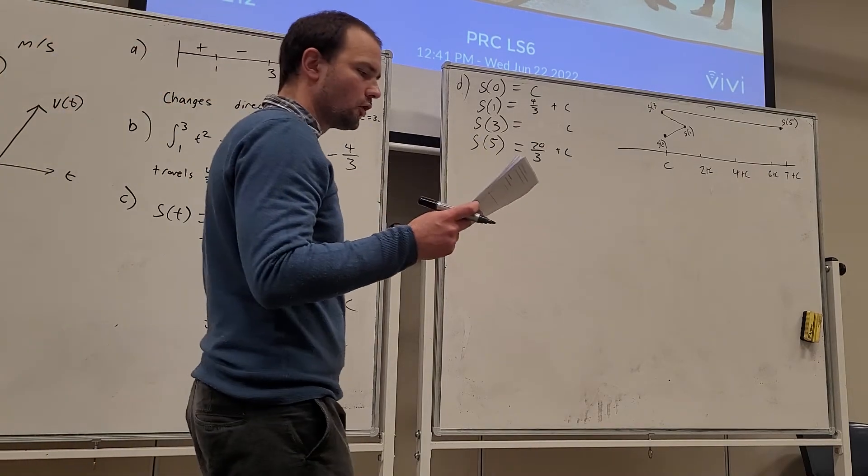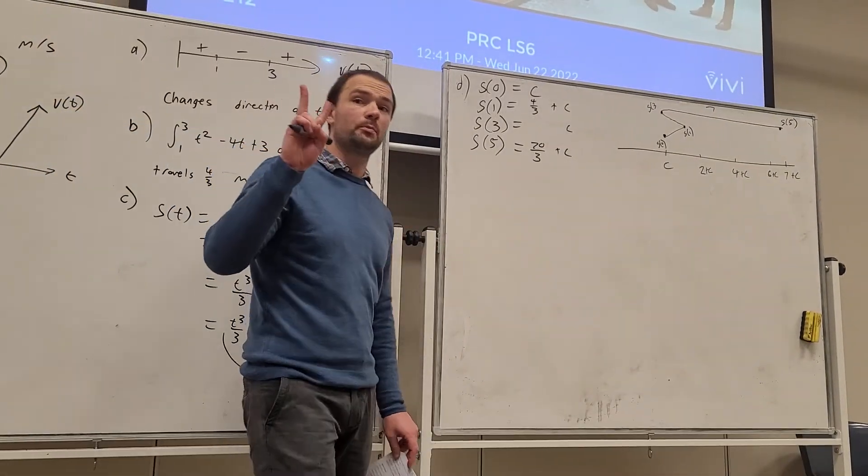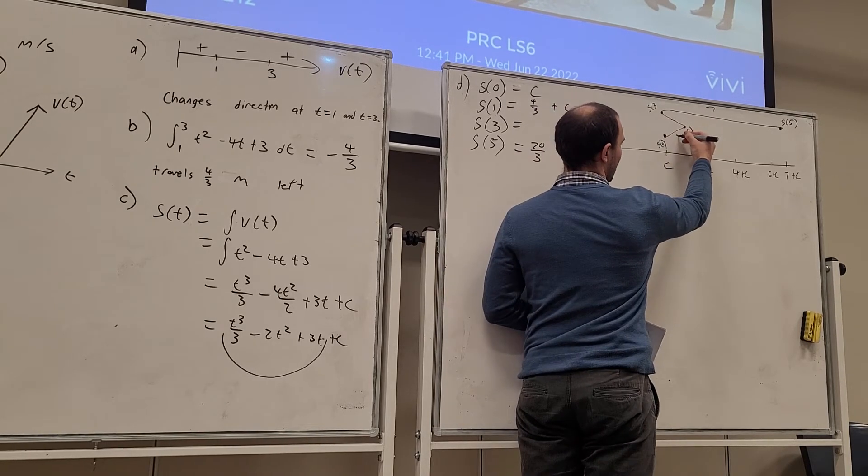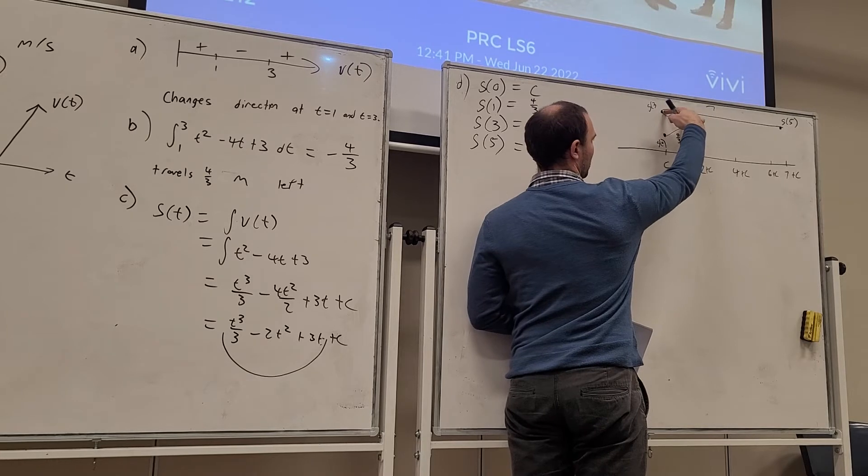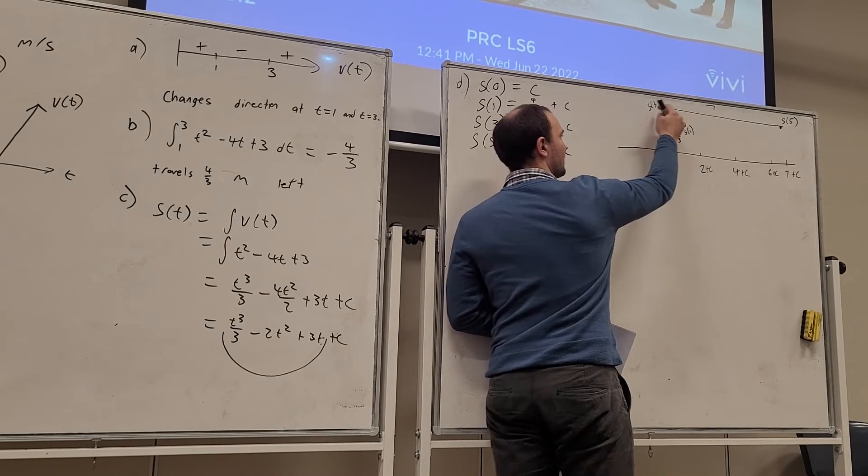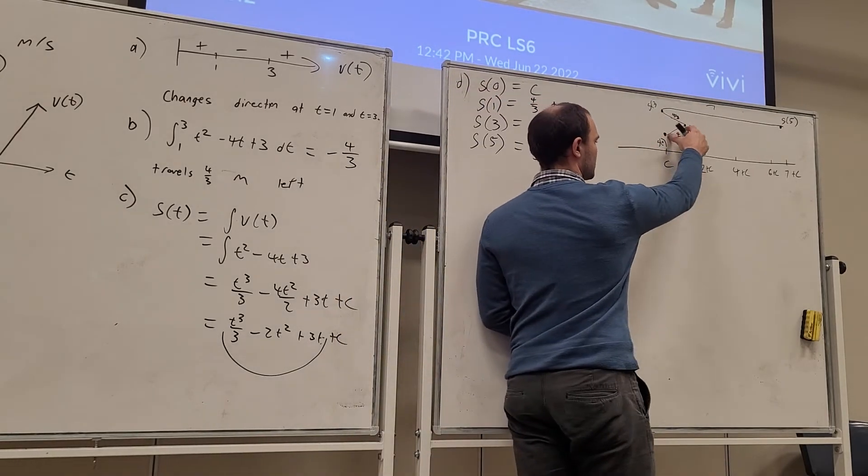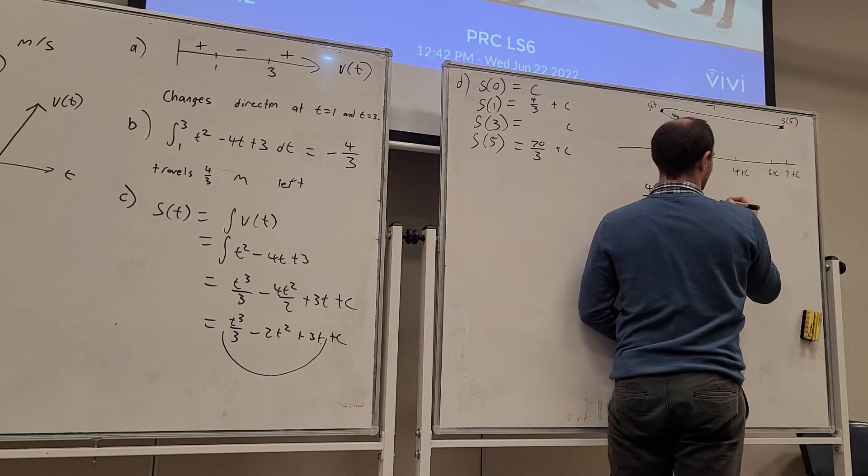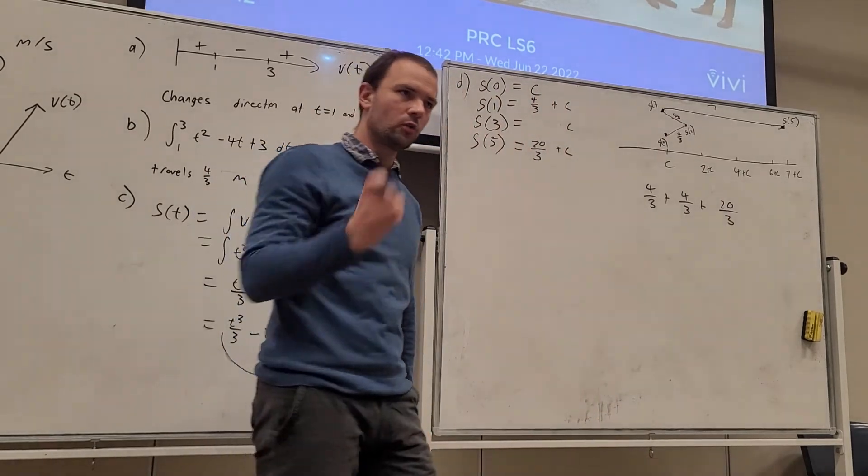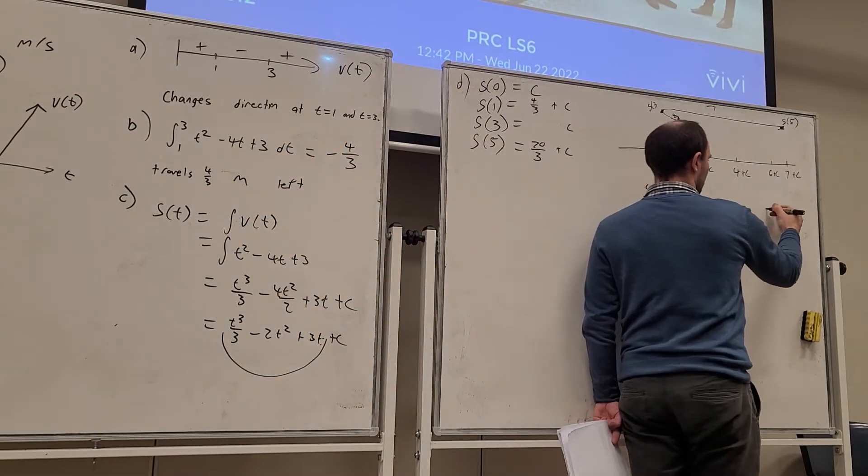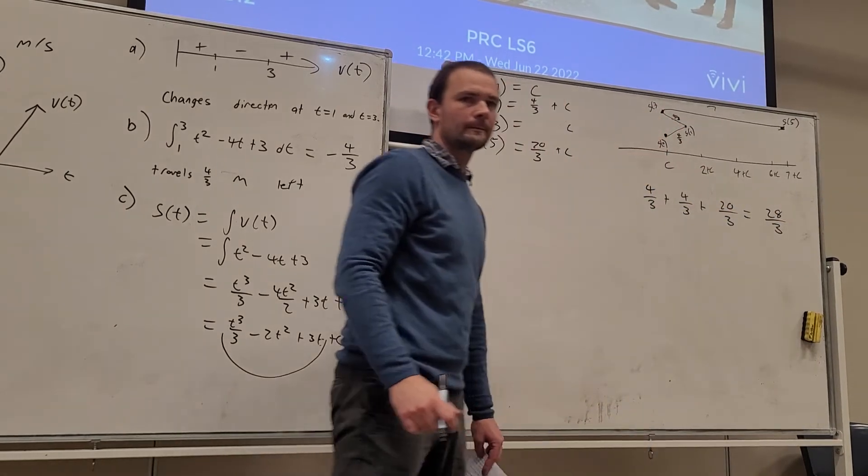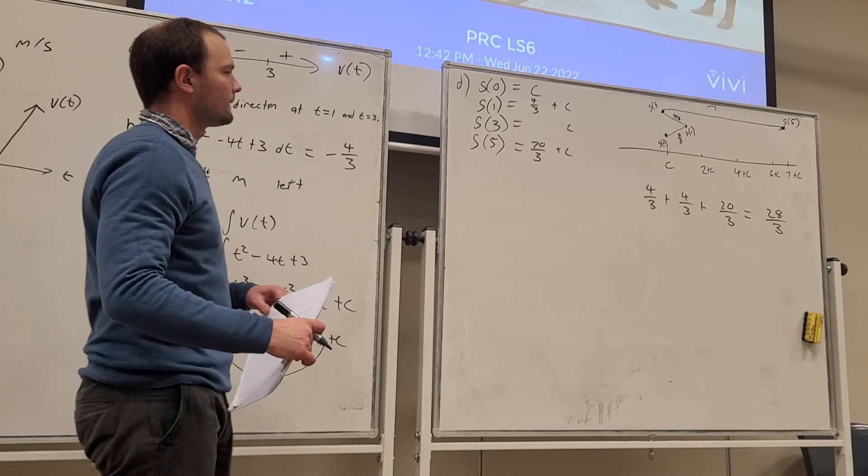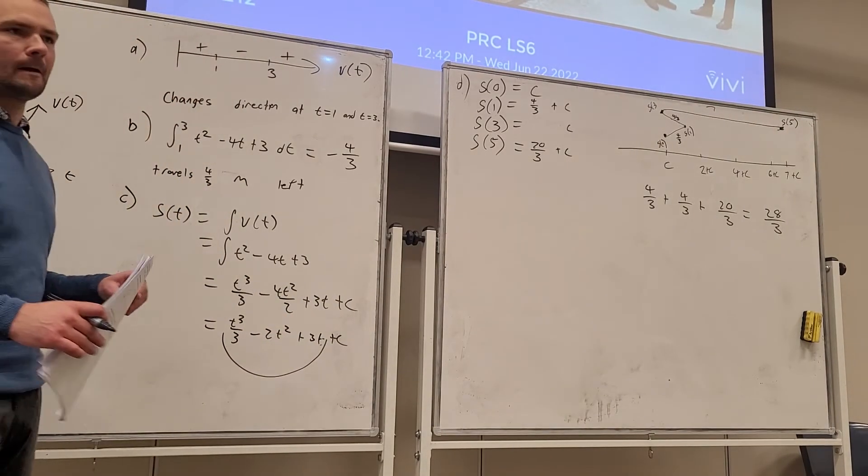Part E. Determine the total distance over the first 5 seconds. I'm going to show you two procedures here to determine the total distance. The first procedure is to use our motion diagram. So we know that distance is 4/3, and this distance is also 4/3. It travels from there back to the point where it began. So if we think of the total distance, we've got 4/3 plus 4/3 plus how far is it from here to here? 20/3 units. So then the total distance that it travels over this is 28/3.